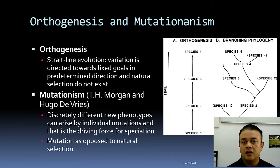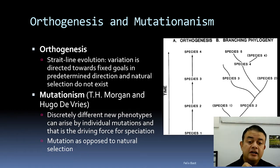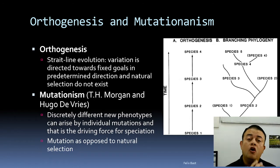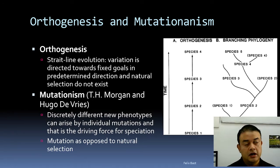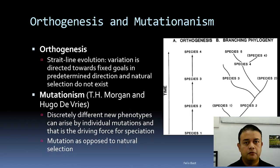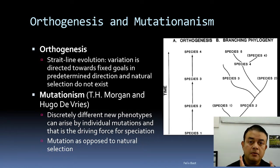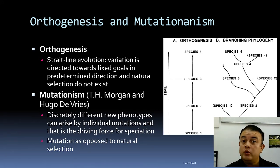After Darwin comes the concept of T.H. Morgan — the famous man who worked on Drosophila genetics — and Hugo de Vries. This concept is called mutationism: discretely different new phenotypes can arise from individual mutations, and that is the driving force of speciation. As per mutationism, phenotypes are all because of mutation and natural selection doesn't happen at all. But mutation is only the raw material supplying variation for natural selection to work on — mutationism alone as proposed by Morgan and de Vries is a wrong concept.